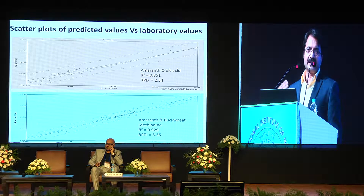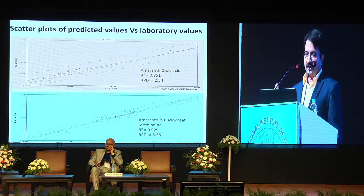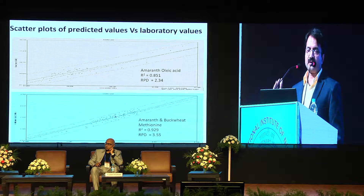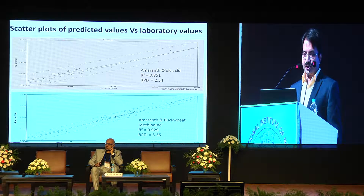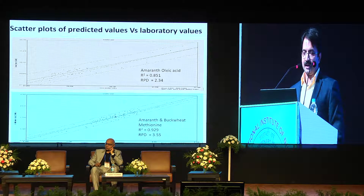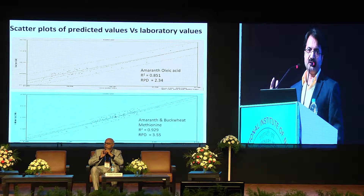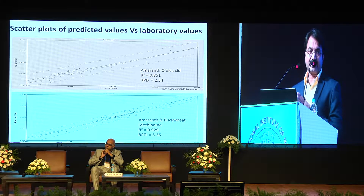The same is the case for oleic acid and methionine in amaranth and buckwheat. For amino acids, we made a joint model of amaranth and buckwheat because the combined number of samples reached 150. For methionine, the band is very narrow and R² is 0.9 and above with RPD more than 3. For oleic acid, the band is a bit wider, but as the R² value improves, the prediction accuracy also improves.